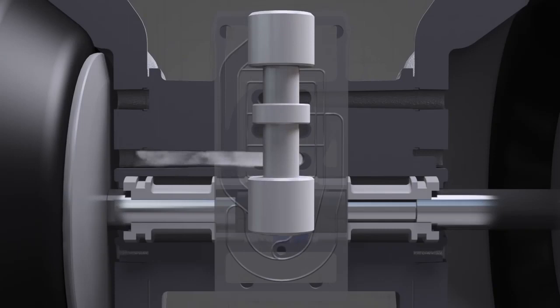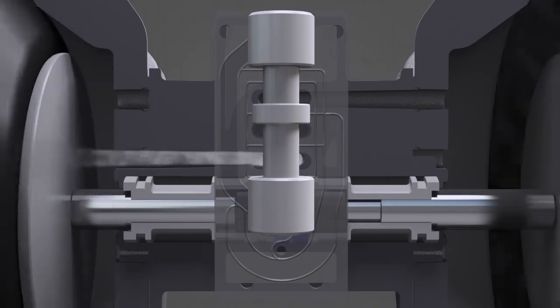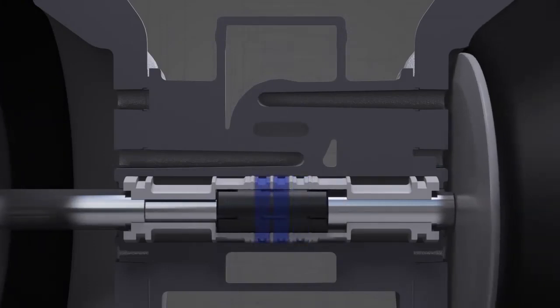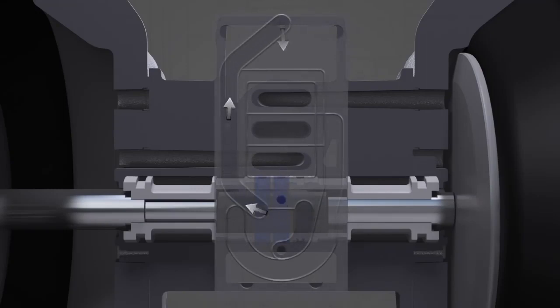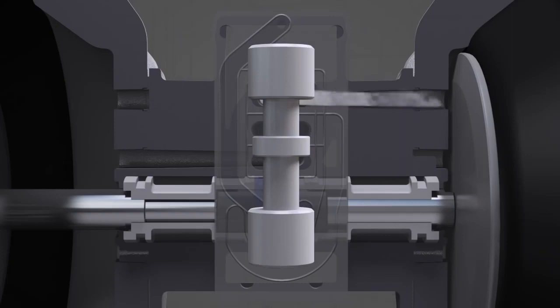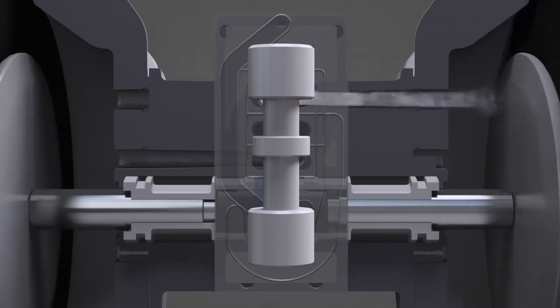This causes the left diaphragm to pressurize and the pilot valve to begin moving left. When the pilot air valve travels far enough to the left, chamber three connects to chamber two, and the air moves the main air valve downward. This causes the right diaphragm to pressurize and the pilot valve to begin moving right.